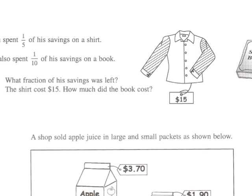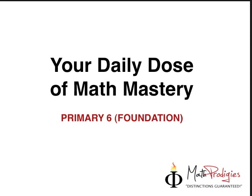So the question says this: Ivan spent one-fifth of his savings on a shirt. He also spent one-tenth of his savings on a book. Now the question is part A, what fraction of his savings was left? Let's not even look at the $15 yet because they never even asked that yet. They only said what fraction of his savings was left.